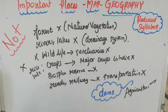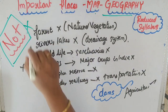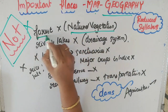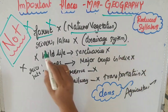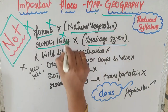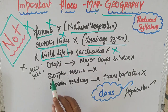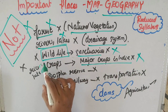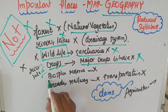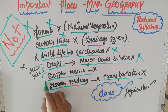You can see the first forest, because natural vegetation is a topic. For the drainage system, there are rivers and lakes, wildlife and sanctuaries, major crops in India — rice, jute, cotton — biosphere, and there is no transportation map, so roads, railways, etc.